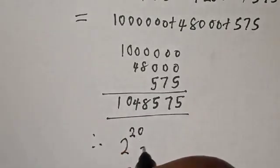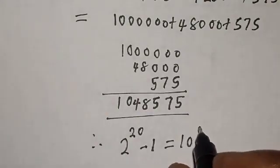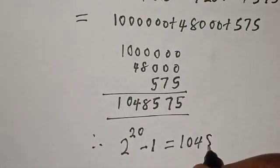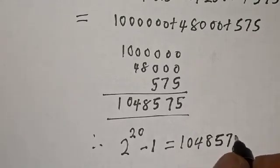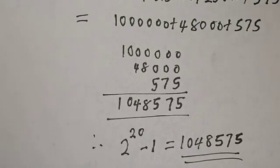Therefore, 2^20 - 1 is equal to 1,048,575. This is the final answer.